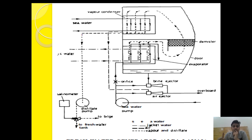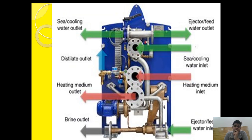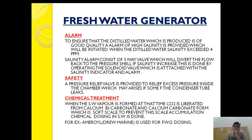This is an additional check and safety provided in the fresh water generator to ensure the quality of the distillate water is good, because this distillate water is used everywhere — for the HT/LT cooling system, for boiler water, and everything. As you can see in the Alpha Laval diagram, this is the brine outlet, this is the ejector feed inlet, this is the heating medium in and out, this is the condenser cooling medium in and out, and this is the distillate pump outlet.